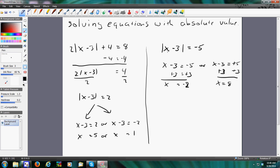Well, the problem is, when you plug them back in, negative 2 minus 3 gets you the absolute value of negative 5, which is 5, not negative 5. And 8 minus 3 is 5, which is not negative 5.